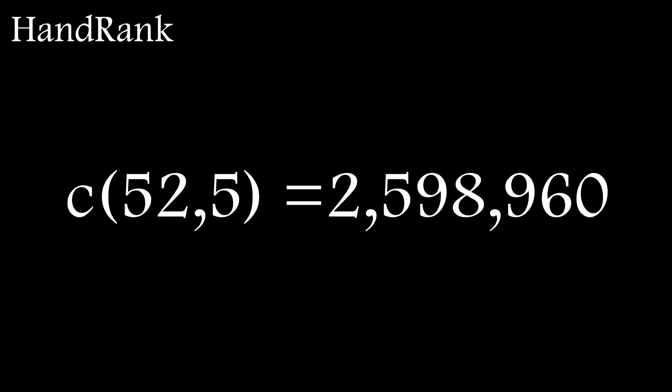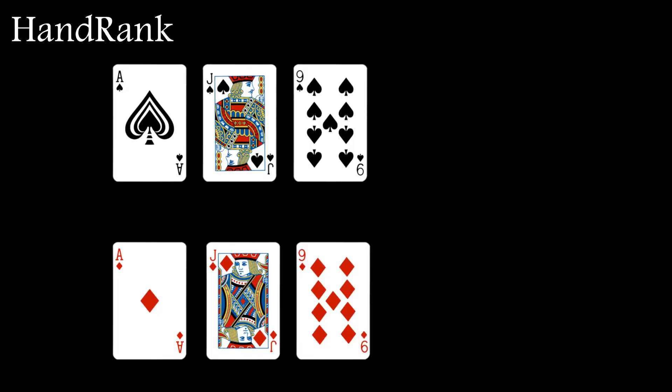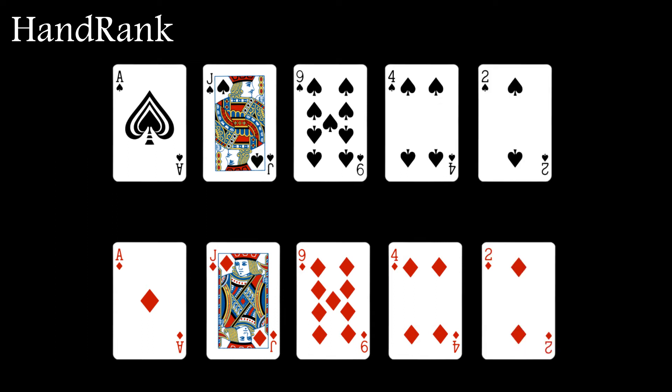What's meant by hand ranking? Well there are nearly 2.6 million 5 card combinations in a deck of 52 cards but we don't need to rank a hand strength compared to all 2.6 million combinations. This is because there are a lot of different hands with an equal ranking. These two flushes are different poker hands but have an equal ranking.